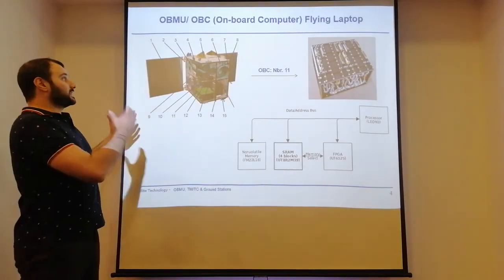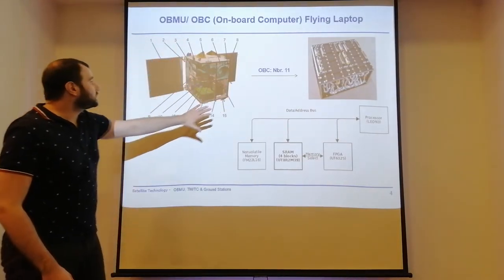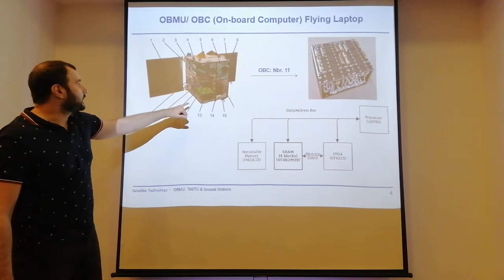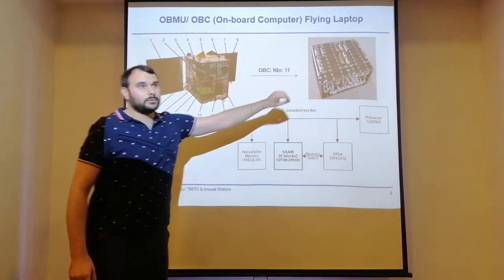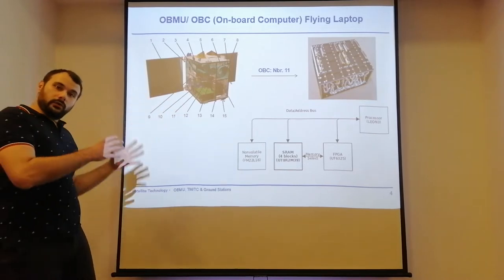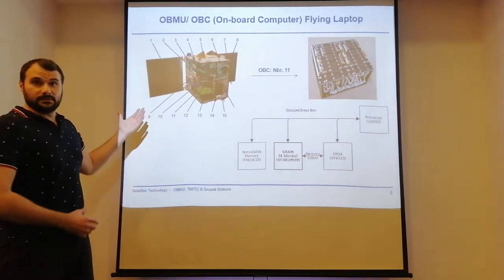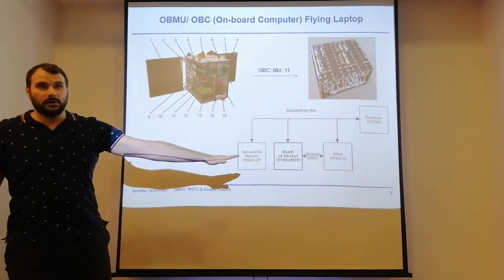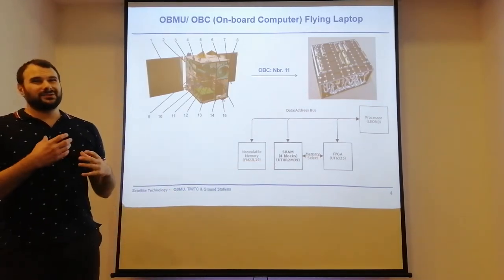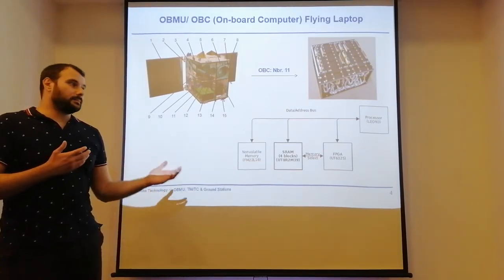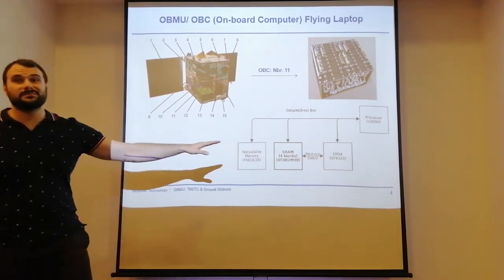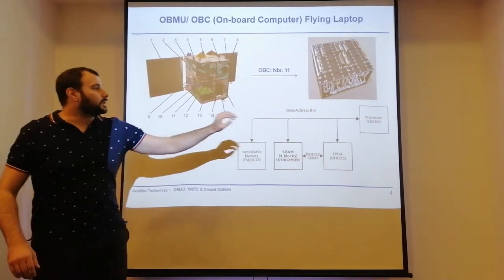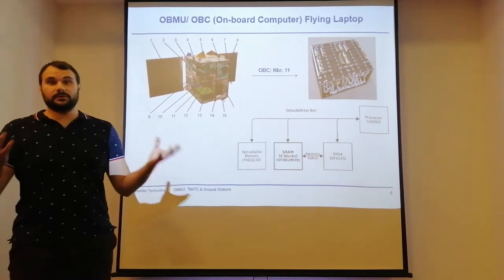Looking at Flying Laptop as an example: number 11 is the onboard computer, using the Leon G processor and falling into the first category of onboard computers. However, it still features an FPGA onboard. Nowadays onboard computers are not really black and white: you might include an FPGA for some specific tasks you want to do quite efficiently, while for the main and broader types of tasks you want something that allows for greater flexibility.